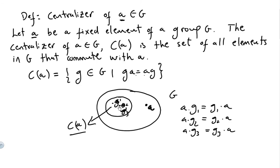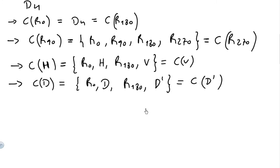This set {g1, g2, g3} is the centralizer. Note there is a difference between the center of G and the centralizer — they are totally different things. This set centralizes a, so it is the centralizer of element a in G. For example, in D4, the centralizer of the zero rotation is all of D4, and D4 is also the centralizer of the 180-degree rotation.